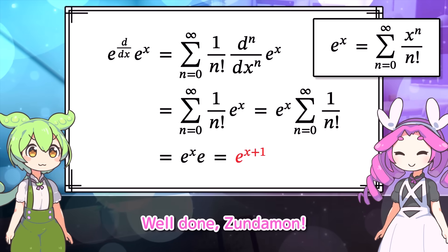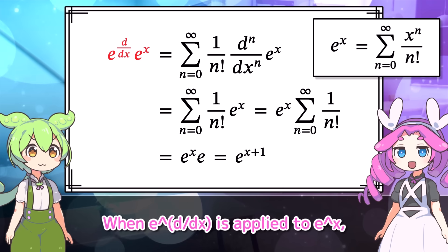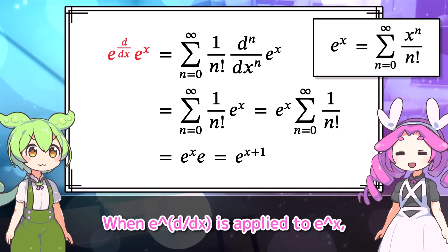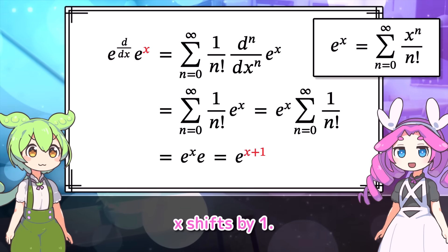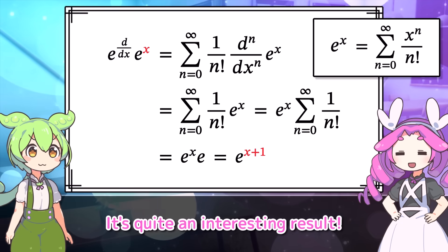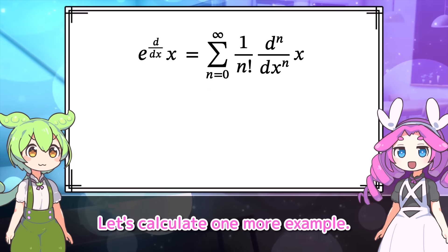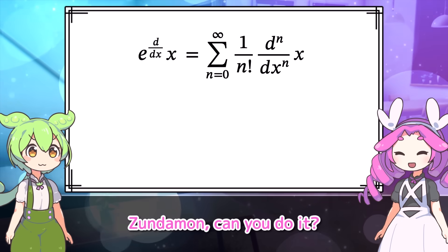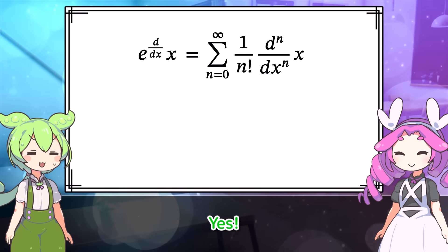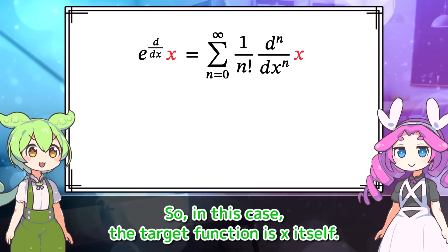Well done, Zindemon. When E to the D by DX is applied to E to the X, X shifts by 1. It's quite an interesting result. Let's calculate one more example. Zindemon, can you do it? Yes. So in this case, the target function is X itself.